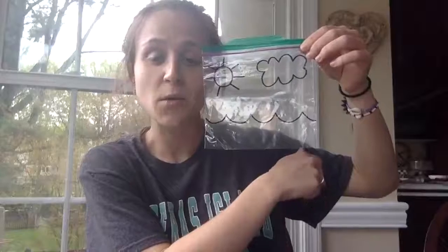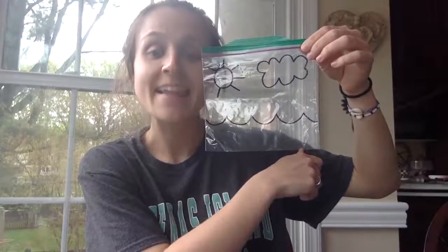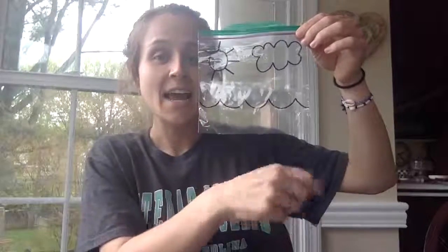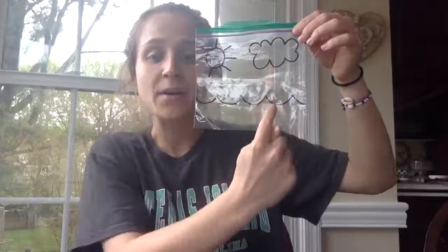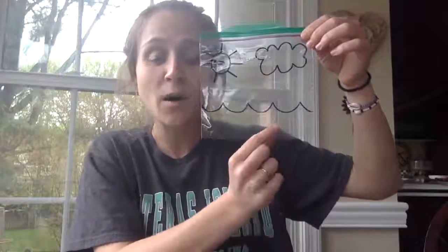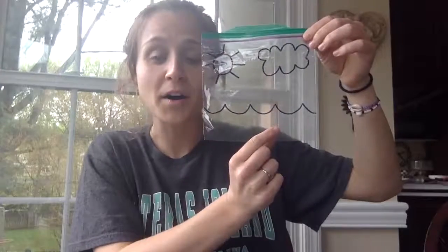Guys, it condenses and comes together to form clouds. When we look in the sky and we see dark clouds, what does that mean is going to happen? That's right — rain! So when there's so much water in a cloud and it has condensed, it comes back down into our body of water in the form of rain. How awesome is that?